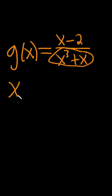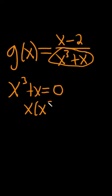Let's start by finding out what numbers don't make sense. We can do that by taking the bottom and setting it equal to zero. We can factor out an x, and so we get this.